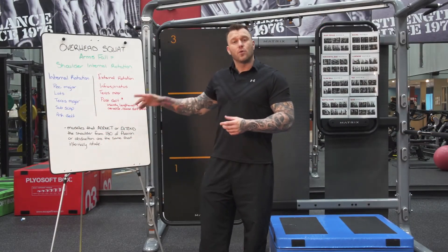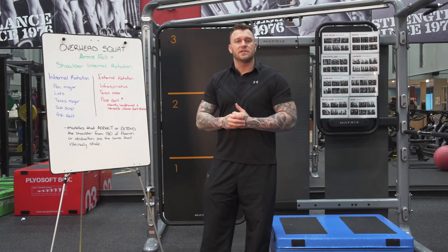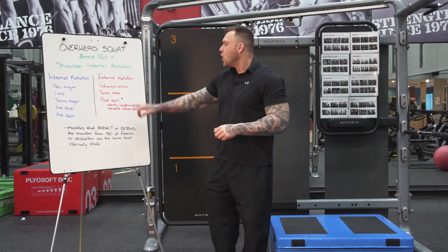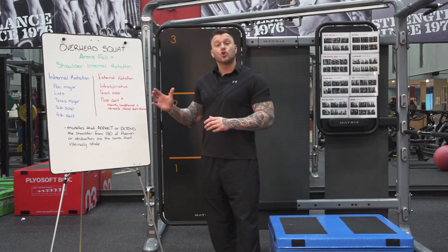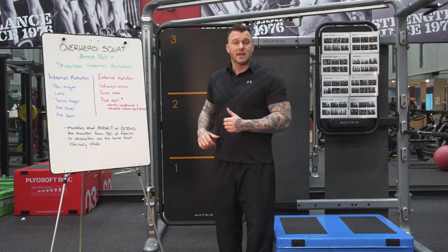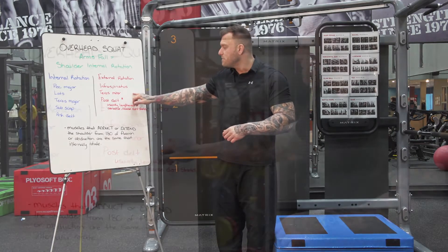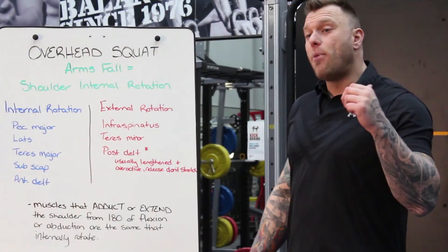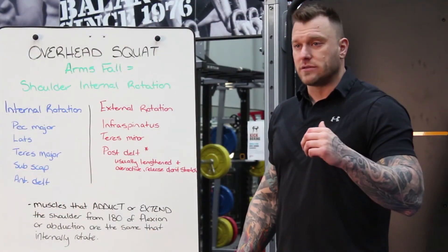On the opposite side, what are the antagonists of these muscles? We have our external rotators: our infraspinatus, our teres minor, and our posterior delts.